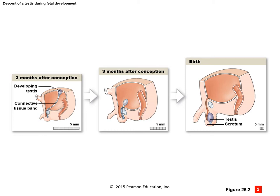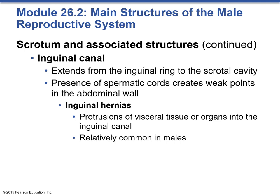Rarely, one or both testes fail to descend into the scrotum, and different surgical interventions may need to be undergone. The inguinal canal extends from the inguinal ring to the scrotal cavity. The presence of the spermatic cords creates a weakness in the mostly closed canal, and in this case we run the risk of creating inguinal hernias. Hernias are protrusions of visceral tissue, like your organs, into the inguinal canal. This is much more common in males than females, and it typically is genetic.